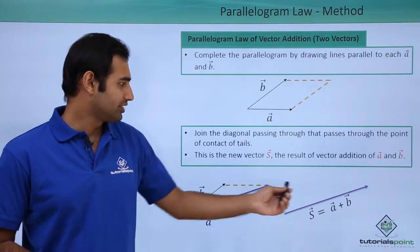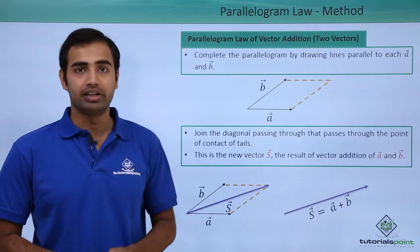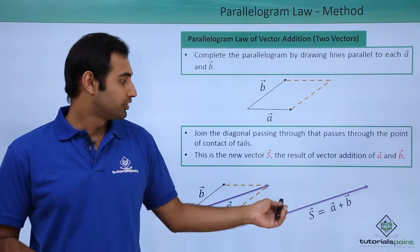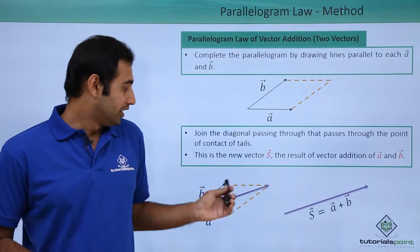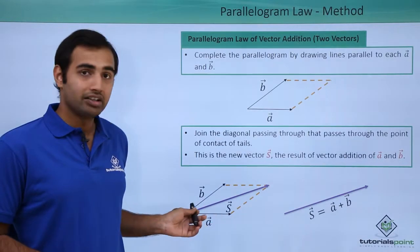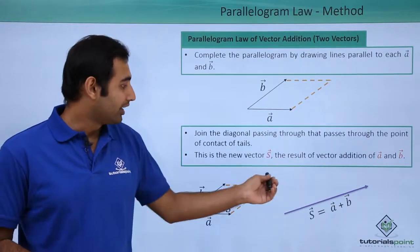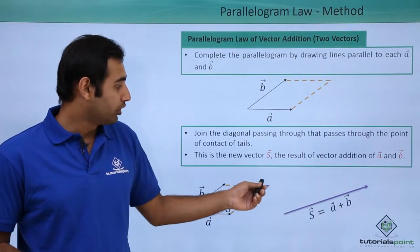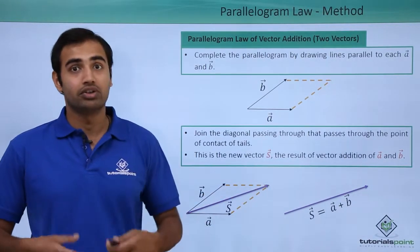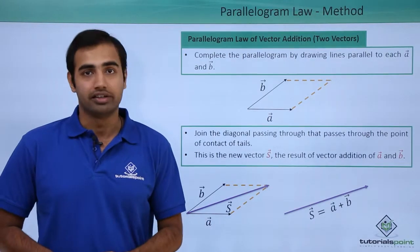If I draw the resultant vector separately, it will look something like this — starting at the point of coincidence of tails and ending at the point of coincidence of the dotted lines I created.